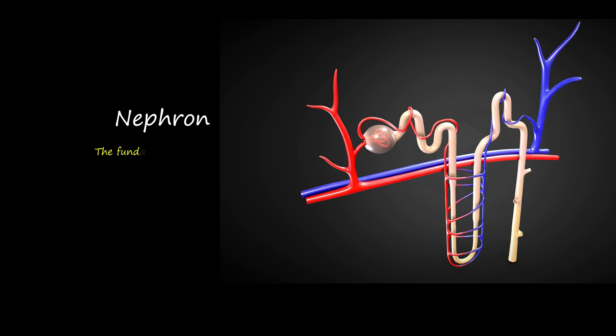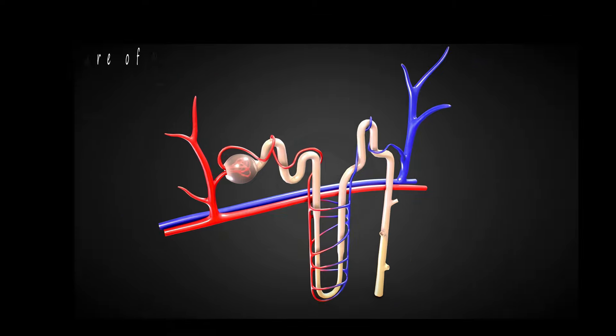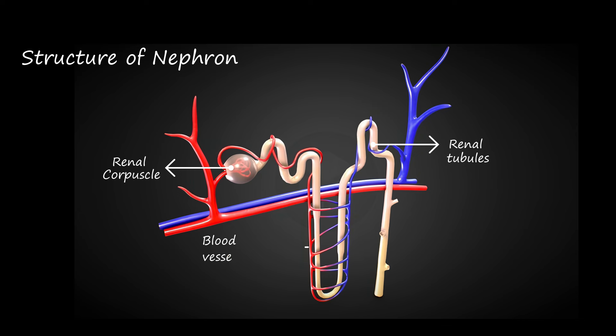The nephron is the fundamental unit of the kidney responsible for filtering blood and producing urine. The nephron consists of three main components: the renal corpuscle, renal tubules, and blood vessels.